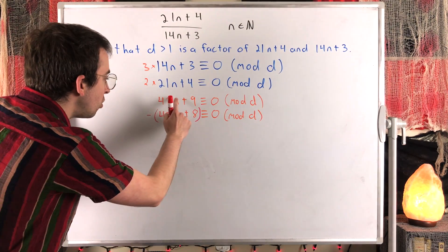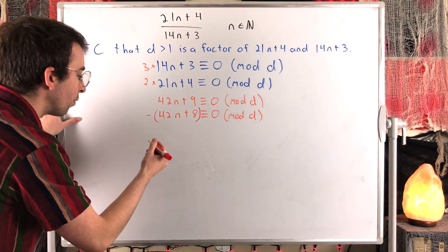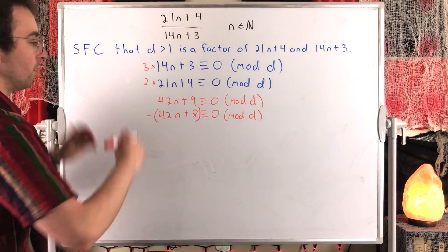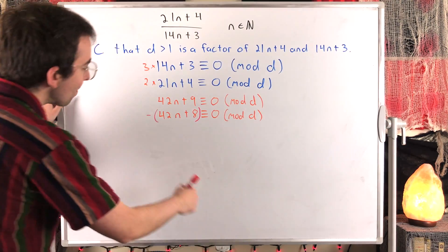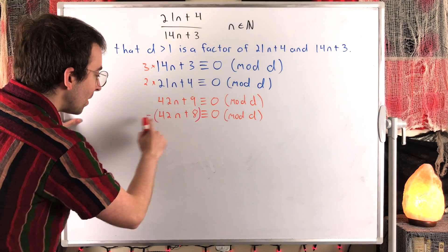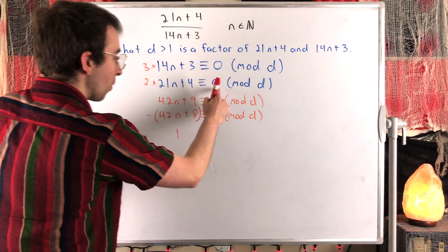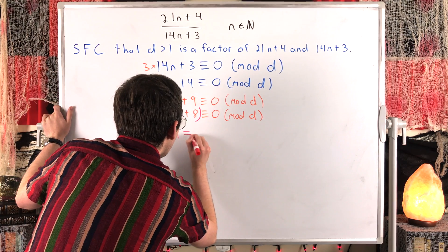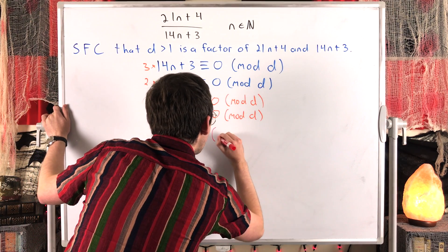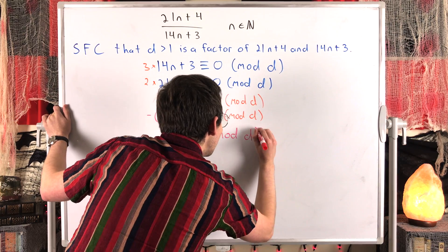What do we get? We get 42n plus the negative 42n, which is just 0n, so we don't have to write that. And then we get the 9 plus the negative 8. That's 1. Here we have 0 plus 0, which is 0. So we have that 1 is congruent to 0 mod D.